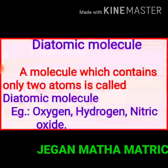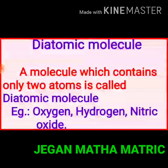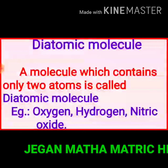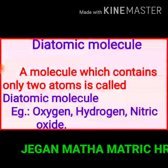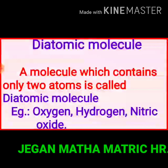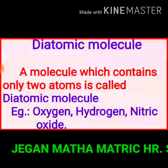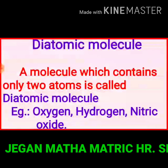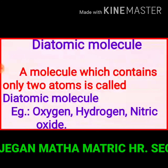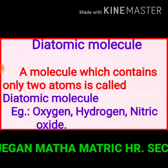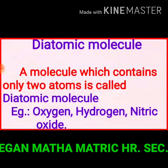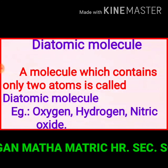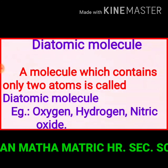Diatomic molecule. Di means two. A molecule which contains only two atoms is called a diatomic molecule. Oxygen molecule, hydrogen molecule, and nitric oxide are some examples of diatomic molecules.